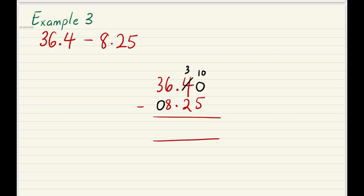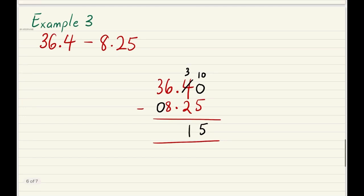So the zero is now a 10. Ten minus 5 is 5. Three minus 2 is 1. Remember to bring down the decimal point. Six minus 8, it's impossible, so we're going to borrow from the 3, which becomes 2. The 6 becomes 16. Sixteen minus 8 is 8, and 2 minus 0 is 2. So for the question 36.4 minus 8.25, our answer is 28.15.